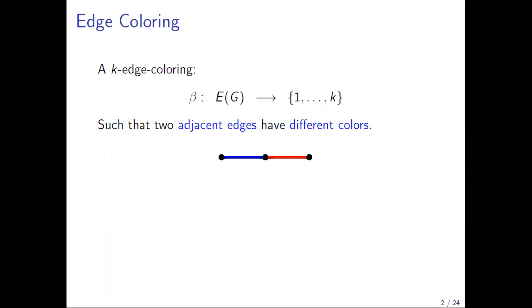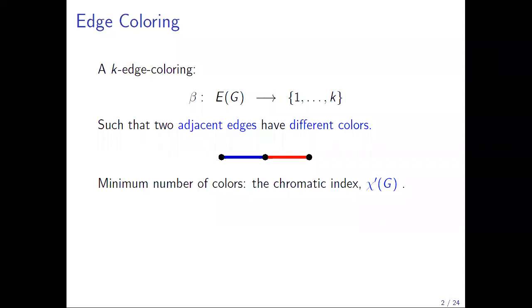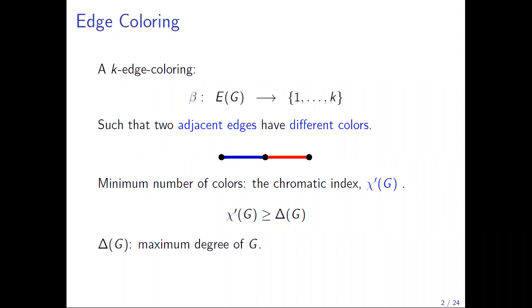Throughout the talk, I will only consider proper edge colorings where all adjacent edges have different colors. What we are usually looking for in coloring questions is the minimum number of colors needed to color the edges of a graph. For edge coloring, this parameter is called the chromatic index, denoted chi prime of G. Contrary to vertex coloring, edge coloring has a very simple lower bound: you need at least delta of G colors, where delta of G is the maximum degree of your graph.